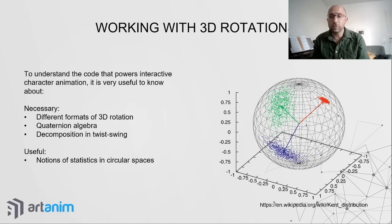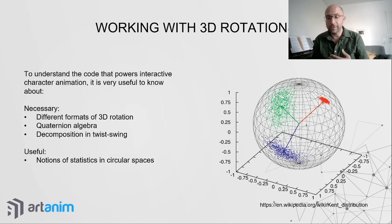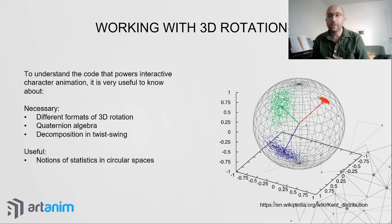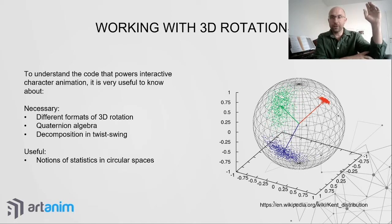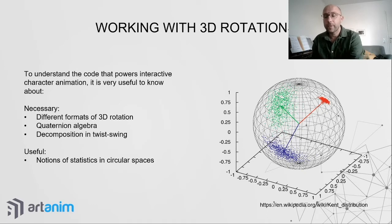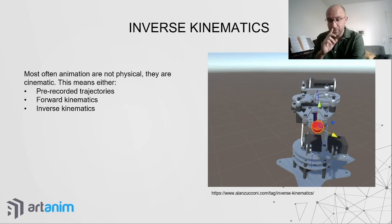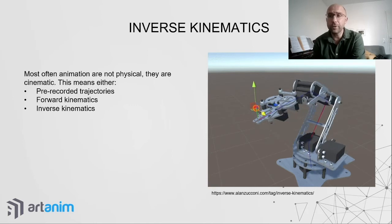These rotations are generally handled using quaternions, a generalization of complex numbers. You don't need to understand this deeply to train a character with an existing algorithm, but if you want to create your own physics-based character animation controller, you'll likely need to understand it. Also useful to know is the decomposition into swing and twist: a swing is a lateral movement, a twist is a rotation around the limb's axis.